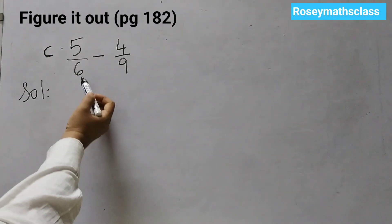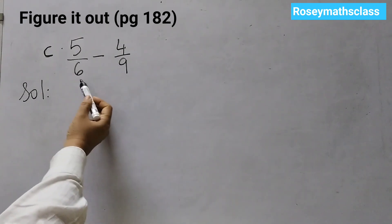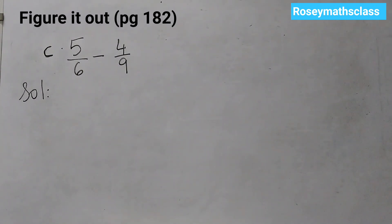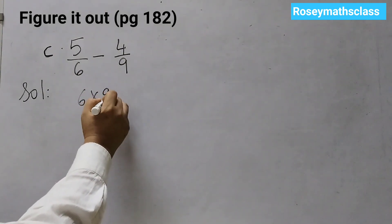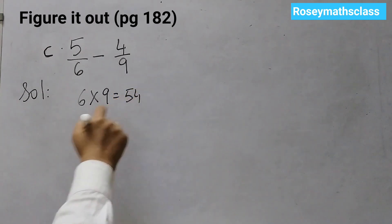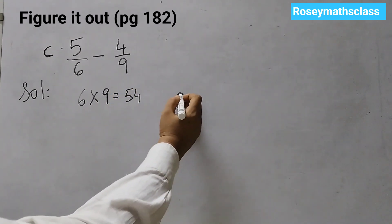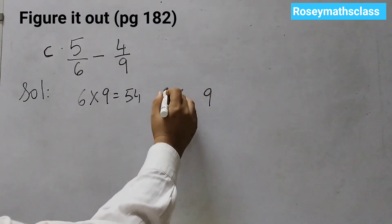The next one is 5 upon 6 minus 4 over 9. Different denominators, 6 and 9. However, 6 and 9 we get in the table of 3. 3, 2's are 6 and 3, 3's are 9. So instead of finding the lowest common multiple just by multiplying, like 6, 9's are 54, we have to do the LCM like this.